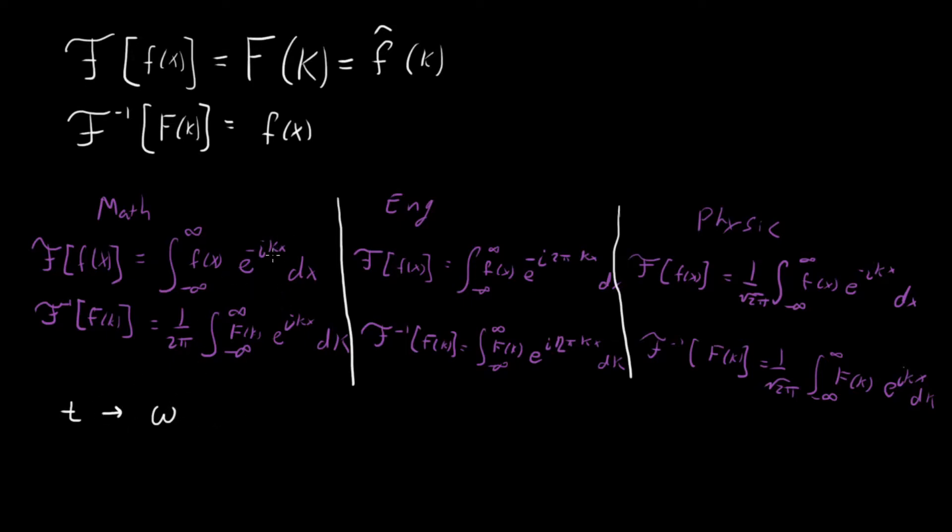The other is that sometimes if people are using x, they won't always use k. And so sometimes people will use this Greek letter xi, also commonly called squiggle. And I think Wikipedia uses this squiggle quite a bit. And so these are just some of the things to be looking out for when people are doing the Fourier transform. So I think I'll stop it there.